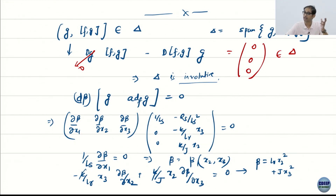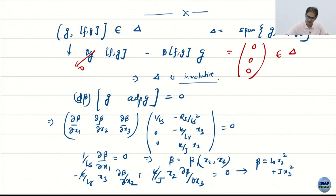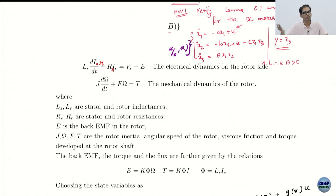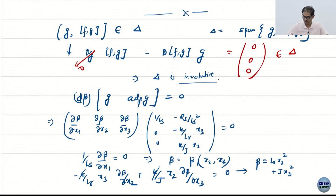With dependence only on x₂ and x₃, you can use the second equality to conclude what β must be. Earlier when we looked at the DC motor, we guessed outputs and only got partial feedback linearization — for example, output x₂ gave relative degree 2, not 3. Now, using the Frobenius theorem and Lie brackets, we work backwards to identify the correct output y with respect to which the system is fully feedback linearizable.